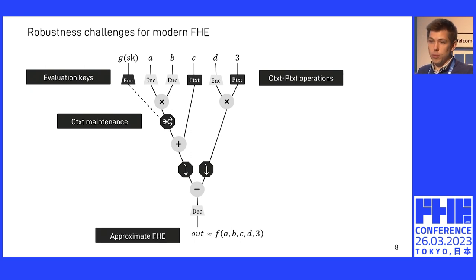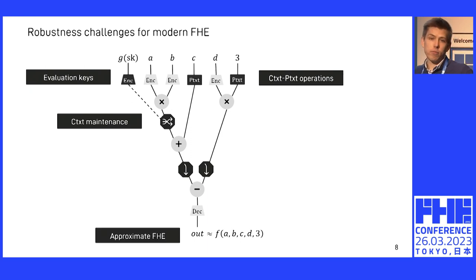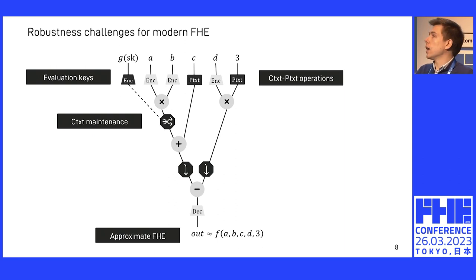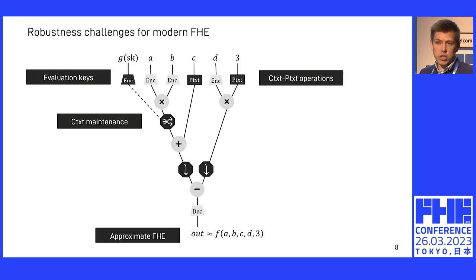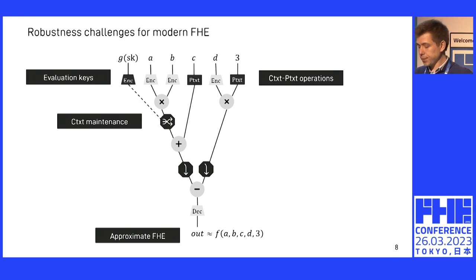We also have to drop the assumption that the result will be exactly equal for approximate FHE, which is very useful for machine learning applications. We have only an approximate guarantee here. This is an issue in practice because we know that, for example, CKKS is more brittle than exact schemes — it doesn't achieve CPAD security — and this becomes very relevant when you try to add robustness.